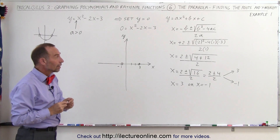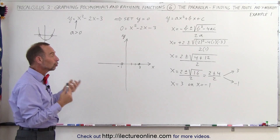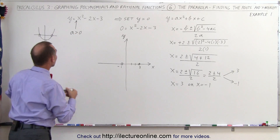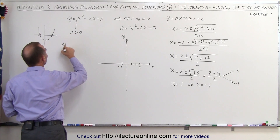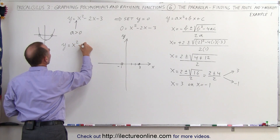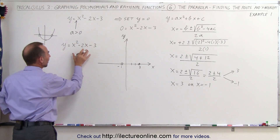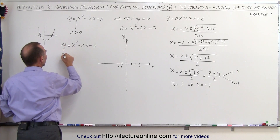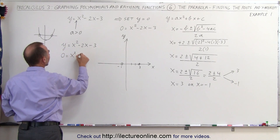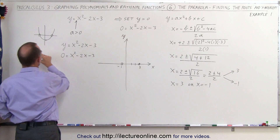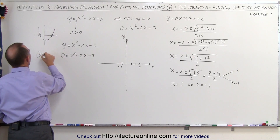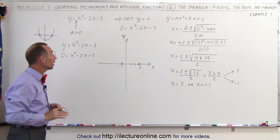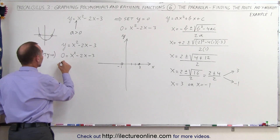Of course, we used the quadratic formula to solve for the two roots, but sometimes you can also simply factor the equation. Let's take the equation again: y equals x squared minus 2x minus 3. If we try to factor that, first we set y equal to 0, so we have 0 equals x squared minus 2x minus 3. We set y equal to 0 to find the roots — that's the methodology. Now let's try to factor this.